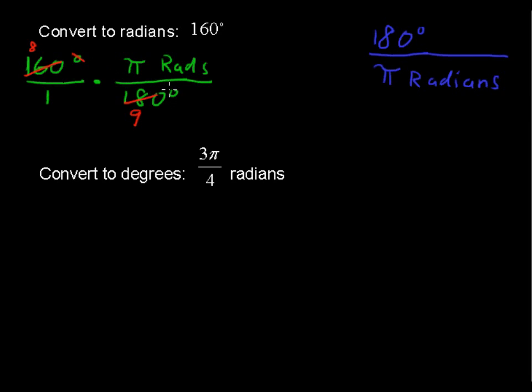The degrees cancel out. We're left with radians. So this equals 8 over 9 pi. Typically, you put the pi in the numerator, so we could say 8 pi over 9 radians.